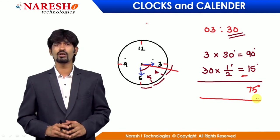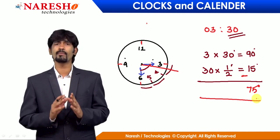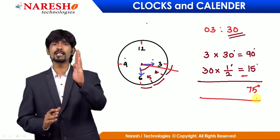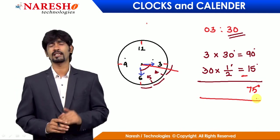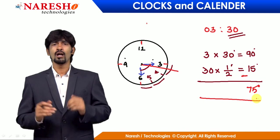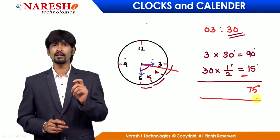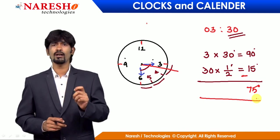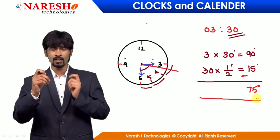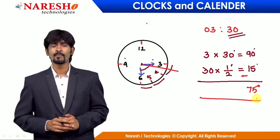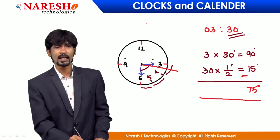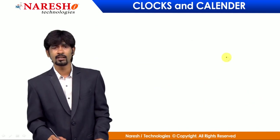So for type 1 questions — time is given, angle to find — just remember: 1 hour makes 30 degrees, and 1 minute makes 0.5 degrees. Let's take another example: 5 o'clock 10 minutes.